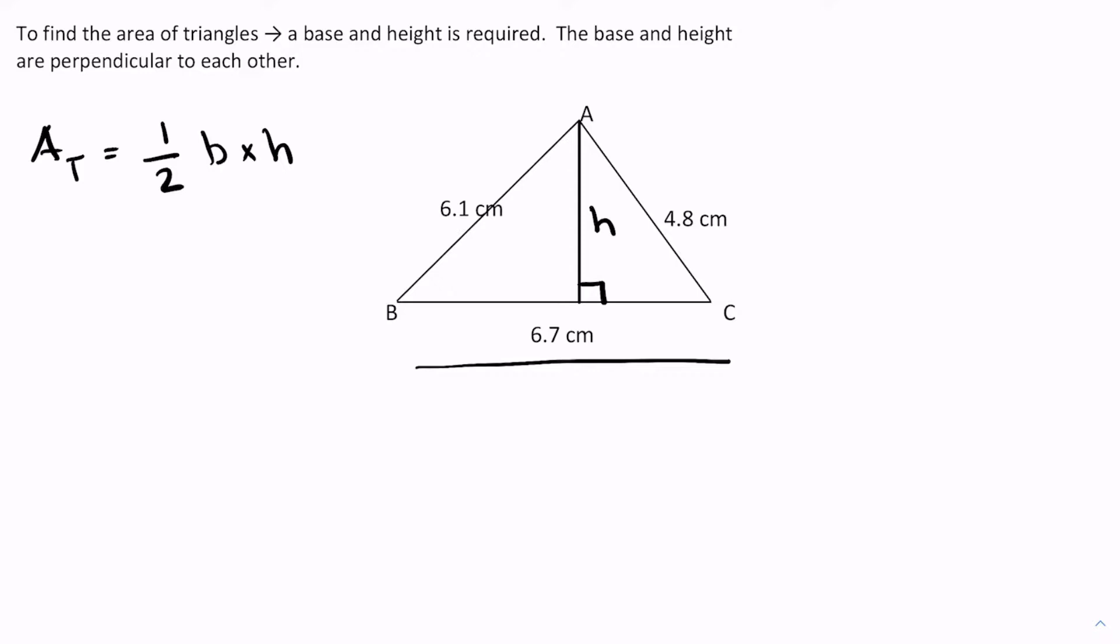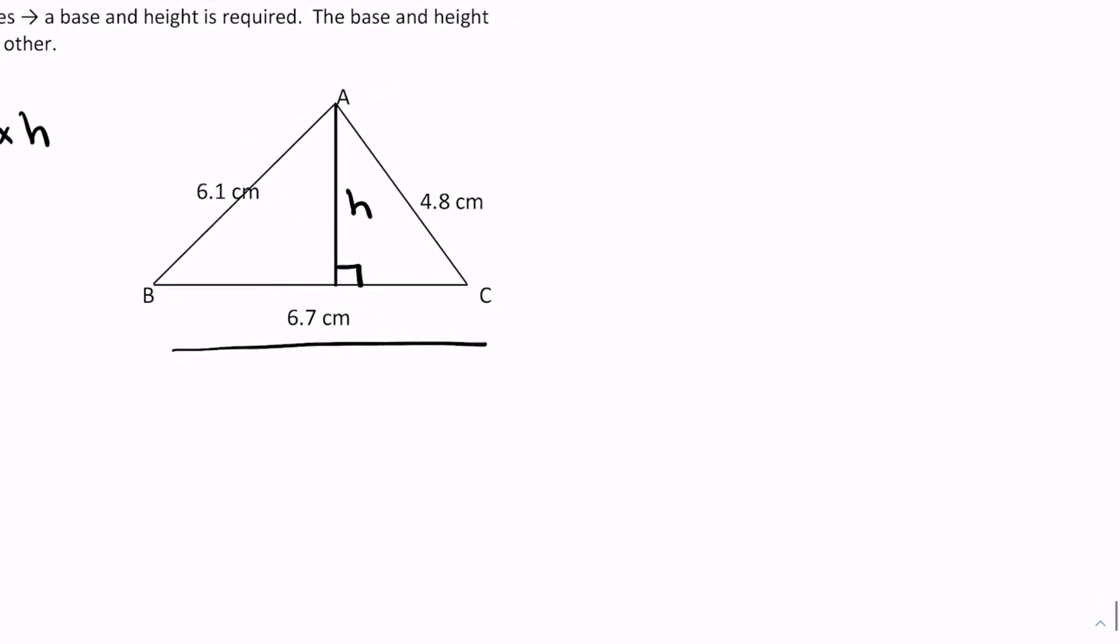But if you recall there is a version of the cosine law that given all three sides you can figure out the angles of the triangle. Now I'm not gonna pick just any random angle, I mean I could pick A but that's not really gonna be too helpful. I'm gonna actually try to solve for angle C because if I have angle C, well I have the hypotenuse of this triangle here.